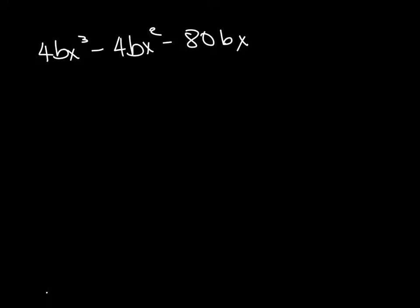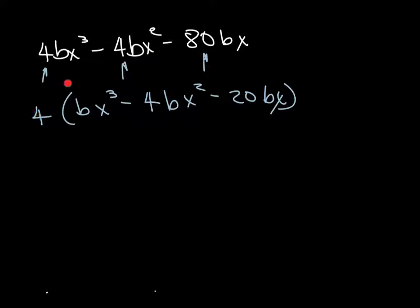We have 4bx cubed minus 4bx squared minus 80bx. So we're going to factor out what's common. I notice that I have a 4, a 4, and I can factor a 4 out of there. So I'm going to take a 4 out, and that leaves me with bx cubed minus 4bx squared minus 20bx. Because, remember, if I take a 4 out of here, it's what number times 4 gives me 80? 20. 20 times 4 gives me 80.